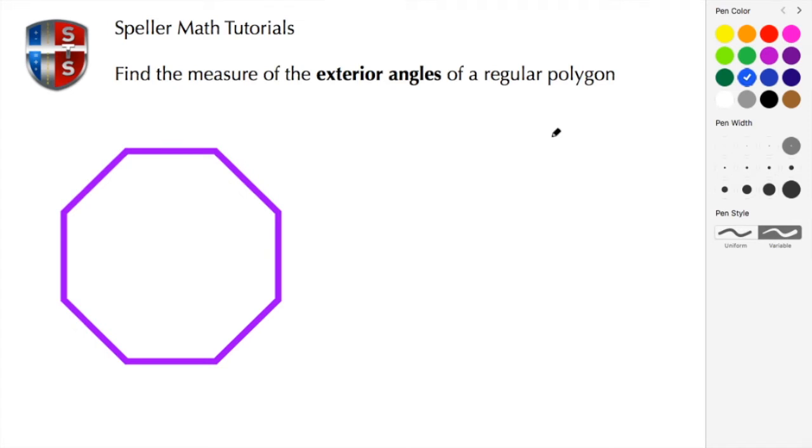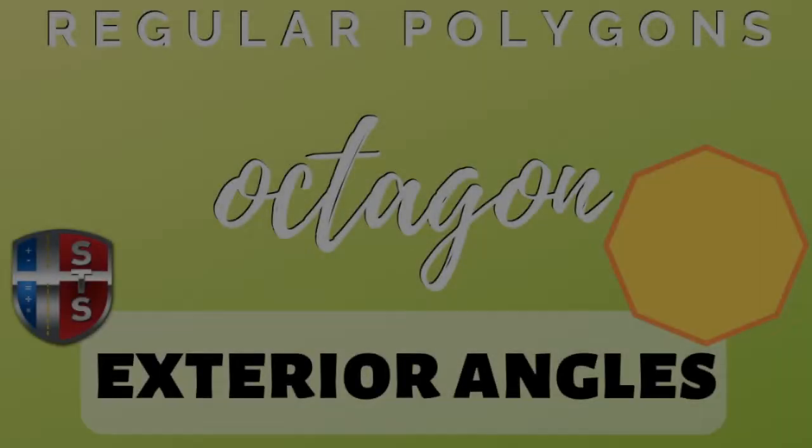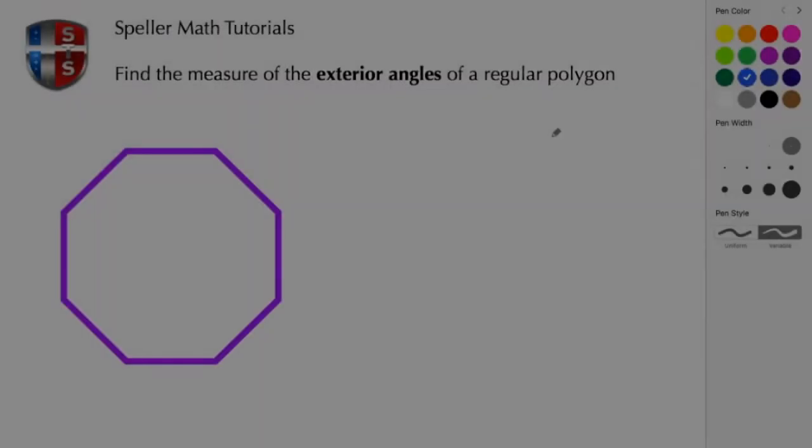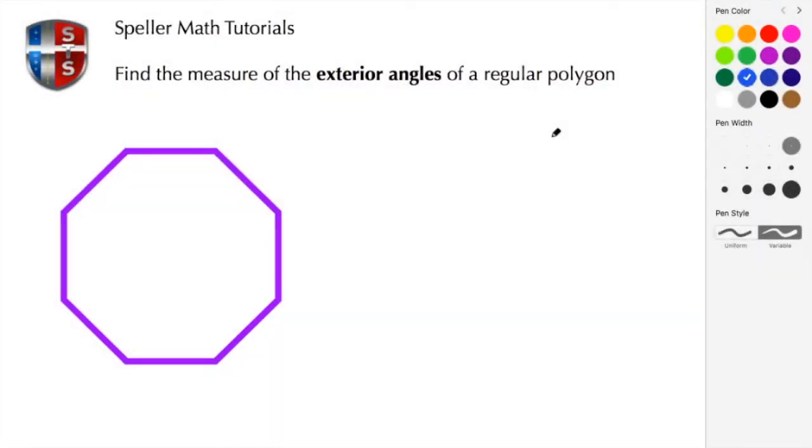Welcome back, it's me AJ. In today's clip we're going to learn two methods to calculate the measure of the exterior angles. Please let me know which of those two methods you like the most in the comments below. All right, let's get started. Here we need to find the measure of the exterior angles of a regular polygon.